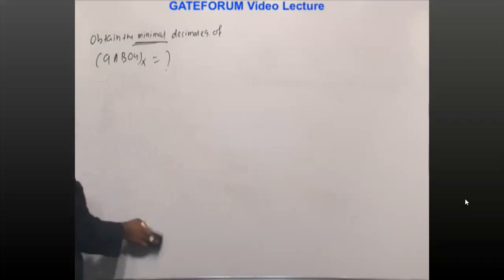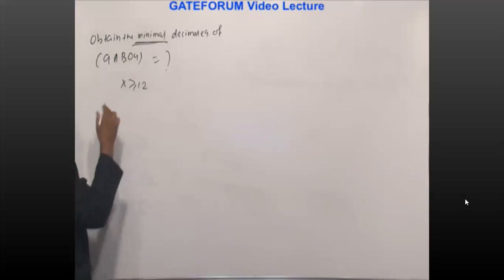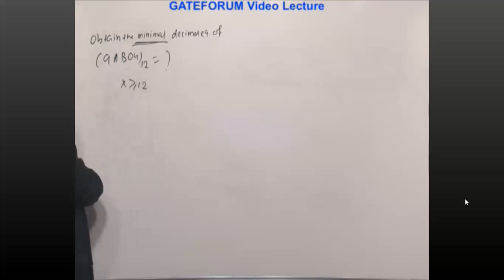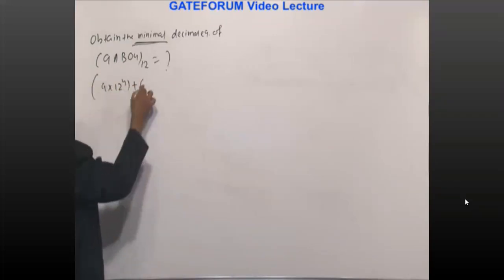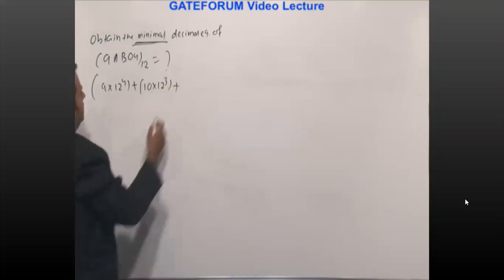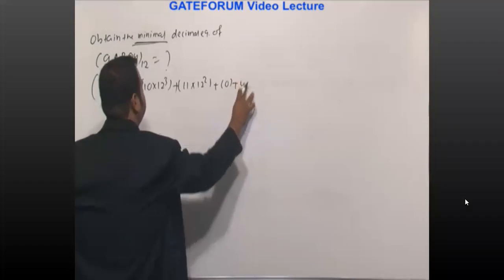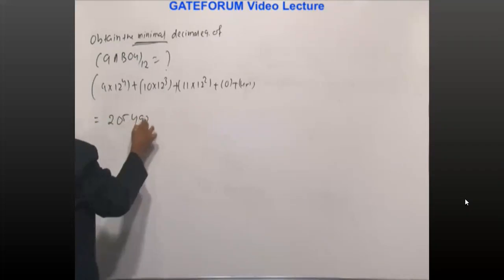What is the minimum value of X? The maximum digit present is B, which is 11. So X must be greater than or equal to 12. If we want the minimal decimal equivalent, X must be 12, because if X is 13, expanding the polynomial with base 13 gives a value greater than with base 12. So with X = 12: 9 × 12⁴ + 10 × 12³ + 11 × 12² + 0 + 4 × 12⁰. The answer is 205492 in base 10.